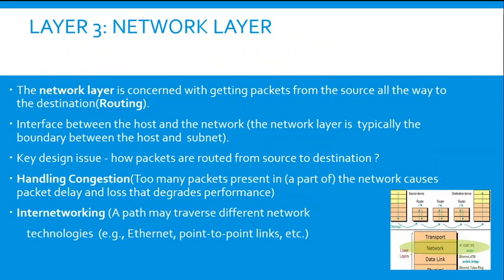On the third layer, the Network layer is concerned with getting packets from source all the way to destination using routing protocols. It is the interface between the host and the network — typically the boundary between host and subnet. Key design issues include how packets are routed from source to destination, handling congestion where too many packets in part of the network cause packet delay, and internetworking — a path made through various different network technologies such as internet, point-to-point links, ad-hoc, and P2P.